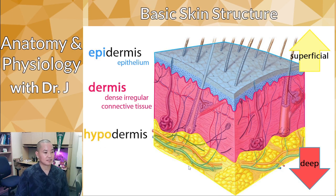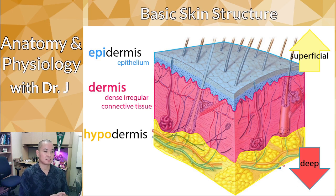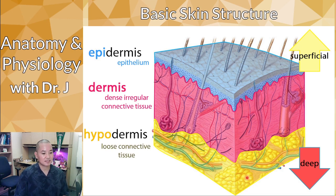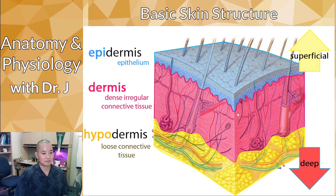Then you have the hypodermis. 'Epi' means outer, so the epidermis is superficial to the dermis. 'Hypo' means under — like hypochondriac or hypogastric — so the hypodermis is below and deep to the dermis. It is loose connective tissue containing white adipose tissue, which appears yellow due to triglycerides, fats, and lipids.